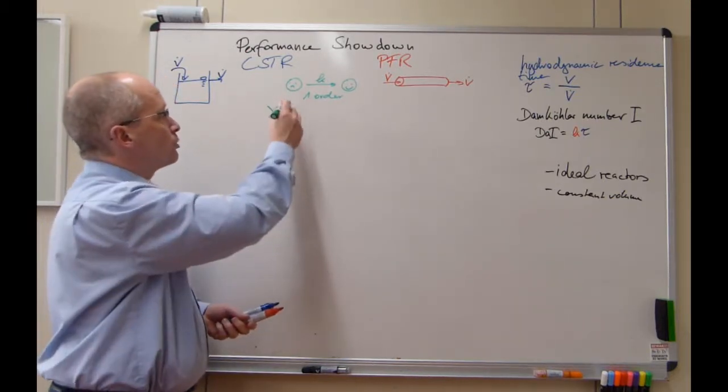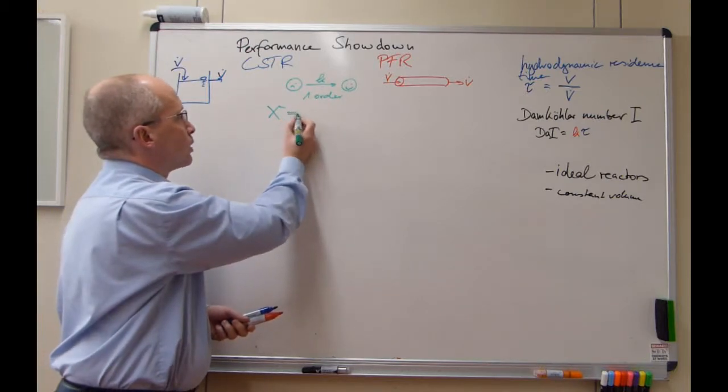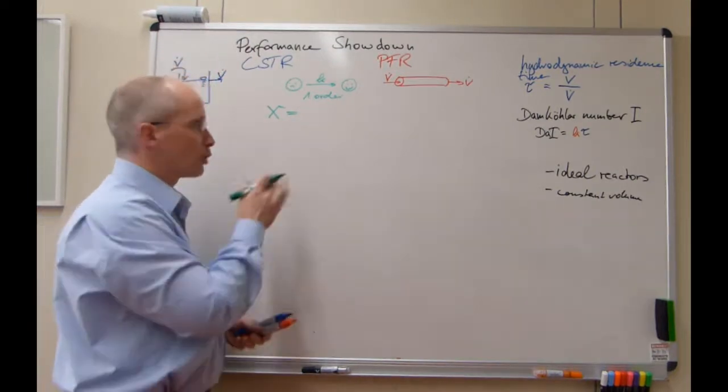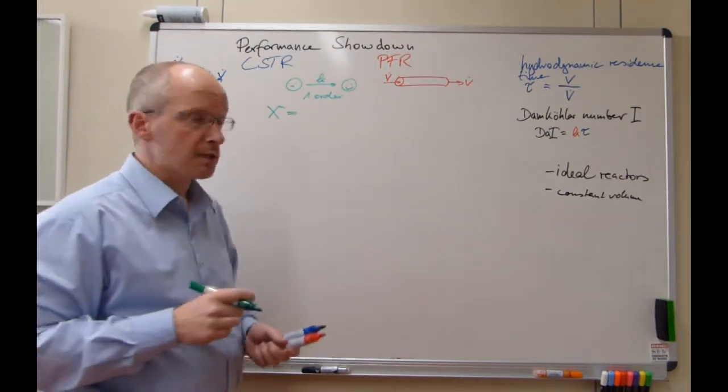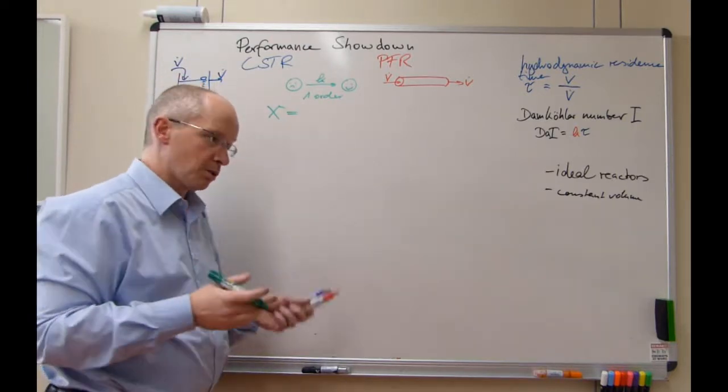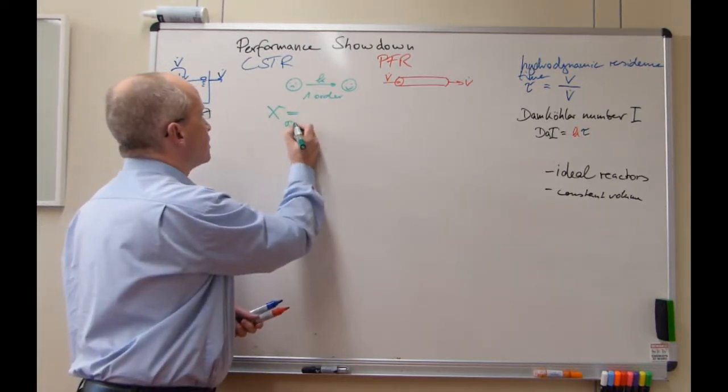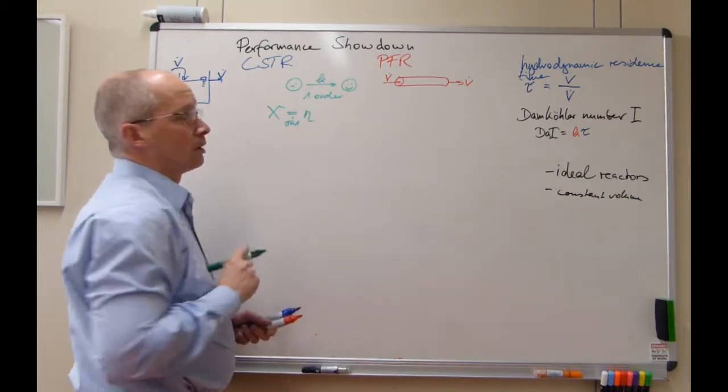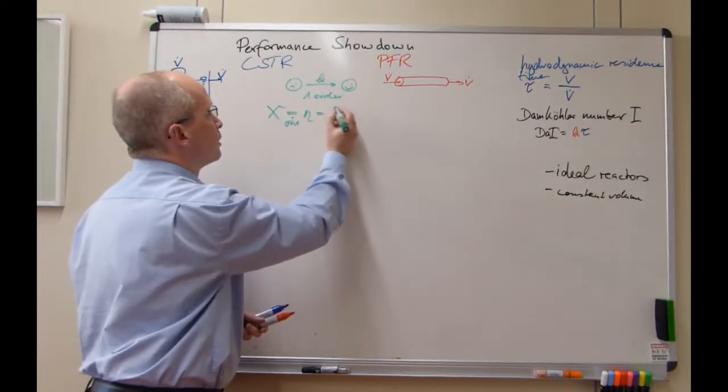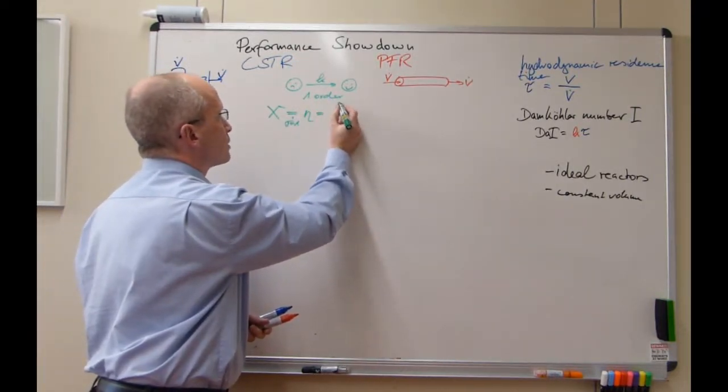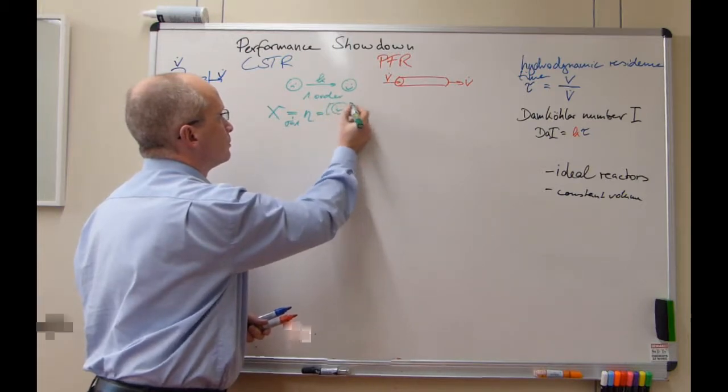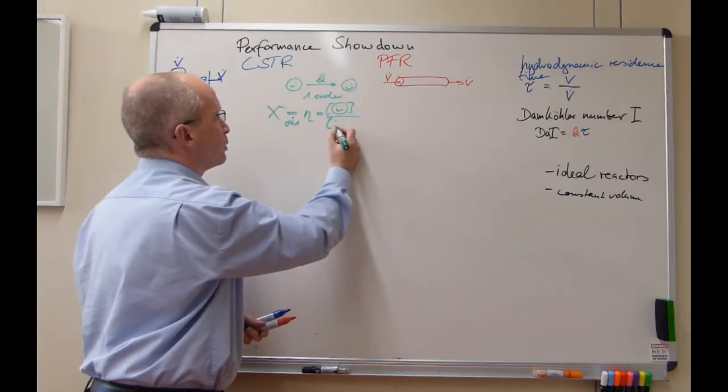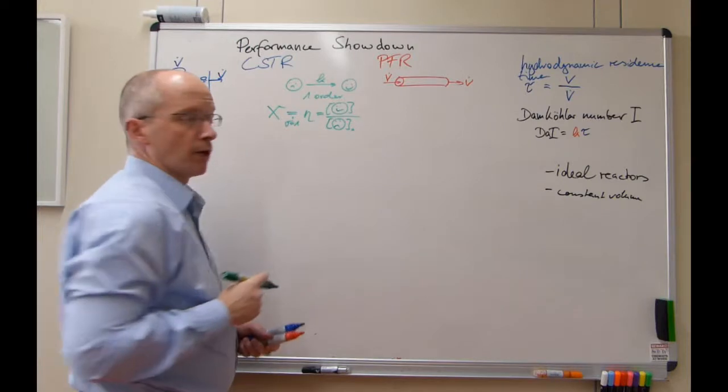Conversion of unhappy students. As we assume here only this reaction takes place - and I was with you on that, this is a very coarse model for a lecture, there can be other states - but if selectivity is one, then this is the same as the yield. This would then be the concentration of happy students compared to the initial concentration of unhappy ones entering the reactor.